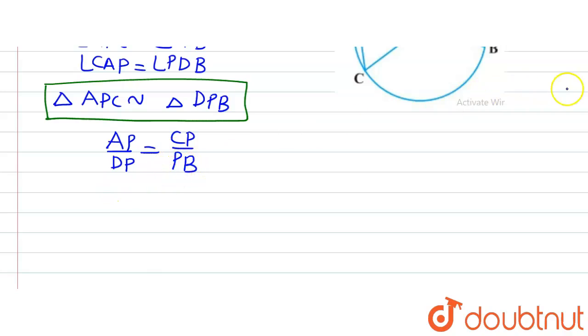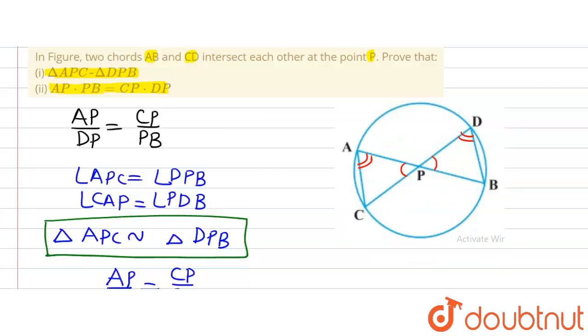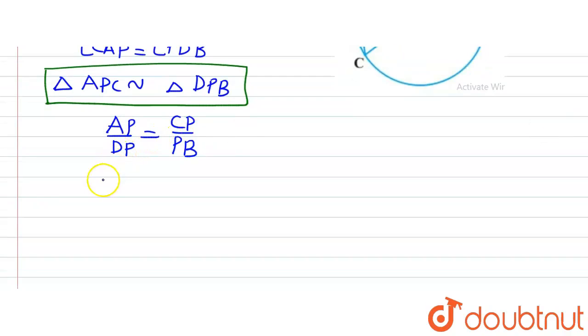Now on solving it further, we will get that after doing cross multiplication, we will get AP multiplied by PB is equal to CP multiplied by DP. And this is what we were supposed to prove in the second part of the question. So that's all. Thank you.